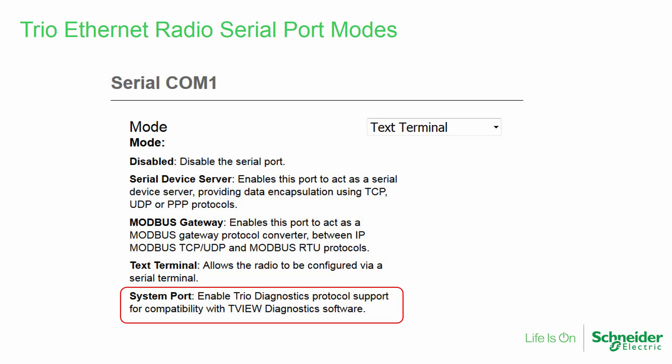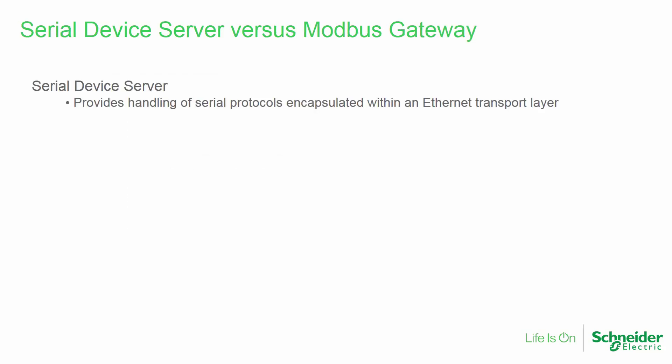Lastly, the port may be configured as a system port, providing the ability to support the TVU diagnostic protocol. We will first discuss the serial device server mode. This provides the ability to transport serial protocols encapsulated within an Ethernet layer. The transport layer may be TCP, UDP, or point-to-point protocol.